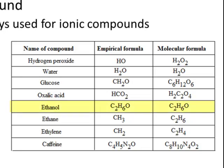In the compound ethanol, both the empirical formula and the molecular formula are the same. But in ethane, the molecular formula is C₂H₆, and the empirical formula is the ratio of those atoms. The 2 to 6 ratio is also the same as a 1 to 3 ratio, so we would write the empirical formula as CH₃.